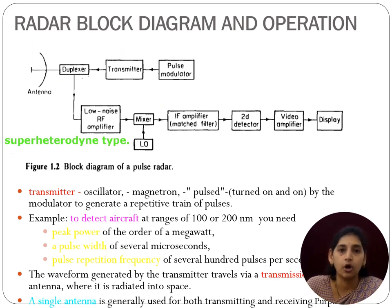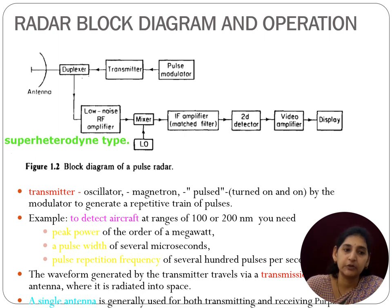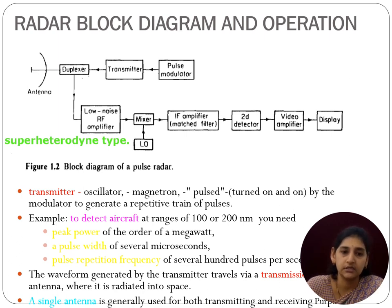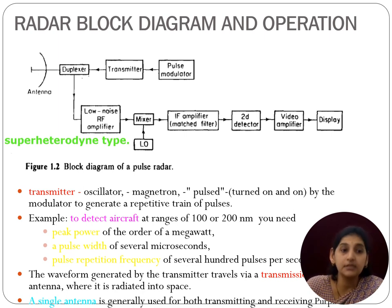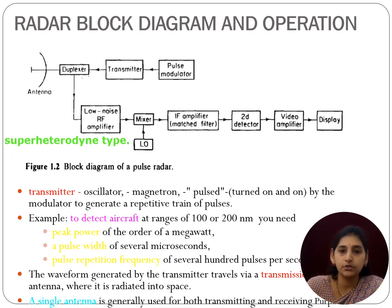This is the complete radar block diagram. The antenna is used for both transmission and reception via a duplexer. The pulse modulator sends the pulse signal to the transmitter, and from the transmitter through the duplexer the signal is transmitted towards the target. Once the echo signal is received back by the same antenna, it is passed to a low-noise radio frequency amplifier, which amplifies the echo signal and sends it towards the display.